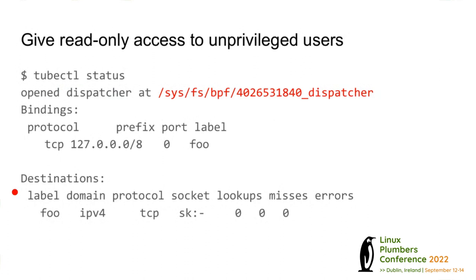One of the goals we had was that because Tubular modifies the network stack quite drastically, we wanted to have something like netstat -a, so an unprivileged user can figure out what's going on in their system. The way it's invoked is 'tubectl status', and you can see the output on the slide.